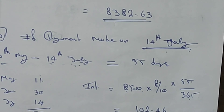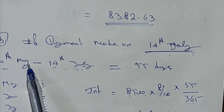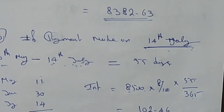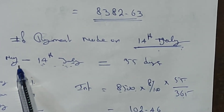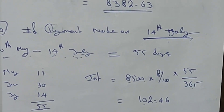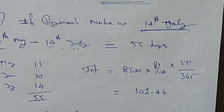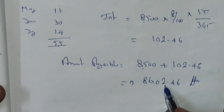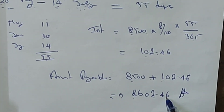Interest = 8500 × 8% × 55 ÷ 365 = ₹102.46. Since you are paying beyond the Average Due Date, interest is added: 8500 + 102.46 = ₹8,602.46. So under option B you must pay ₹8,602.46.